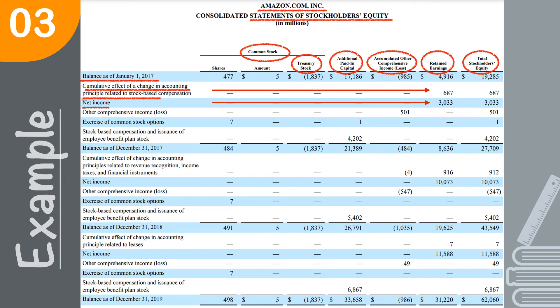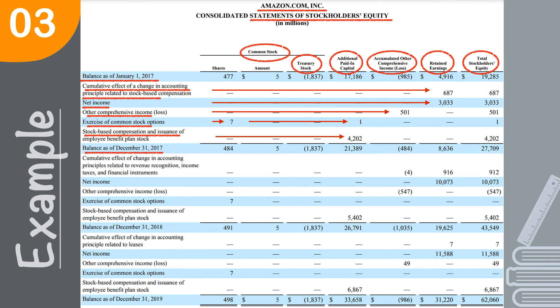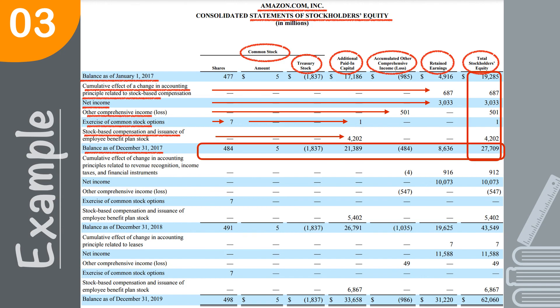And just follow that through for all the different components. You have OCI, which belongs to AOCI. You have exercise of common stock options, which belongs under stock and APIC. Stock-based compensation and issuance of employee benefit plan stock, which belongs under APIC. Once you have those all down, you're just going to write down their totals — the total across, and the total at the bottom.